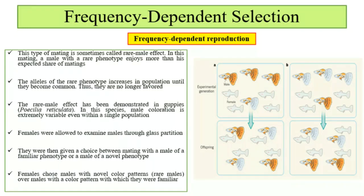Next is frequency-dependent reproduction. Frequency-dependent reproduction is a type of mating, also called the rare male effect. What happens is that a male whose phenotype is rare in the population enjoys more than his expected share of mating. So the rare phenotype alleles, with the passage of time, will increase in the population until they are no longer rare and thus are no longer favored.